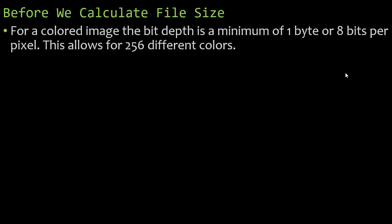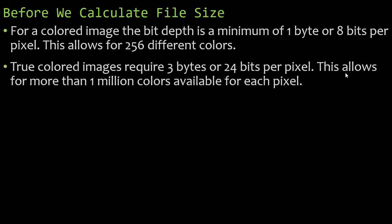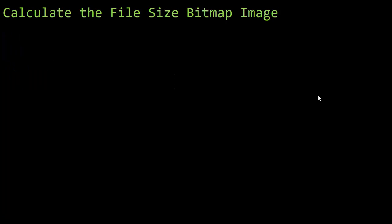For a colored image, the bit depth is a minimum of one byte or eight bits per pixel — you need to know that. If Cambridge gives you a colored image, you need to know that it's eight bits per pixel, which allows for 256 different colors. When we take pictures, we do them in what's called true color images, which require a minimum of three bytes or 24 bits per pixel. This allows for more than 1 million colors available for each pixel. With more colors, we obviously increase the file size, so when you start increasing more and more colors, you're also increasing the file size.